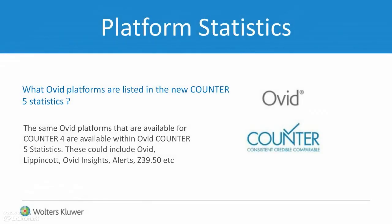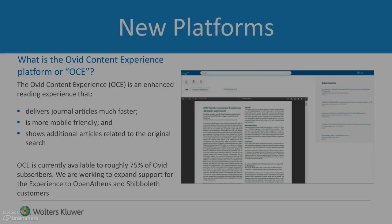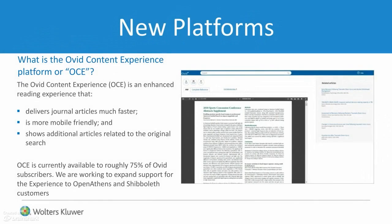All the same Ovid platforms that are available in Counter-4 are available within the new Ovid Counter-5 statistics. One new added access point is the Ovid Content Experience, or OCE, for Ovid Journal subscriptions. The Ovid Content Experience is a new enhanced reading experience for clients who are linking into journals from outside the Ovid platform. Statistics are available about this new linking access.